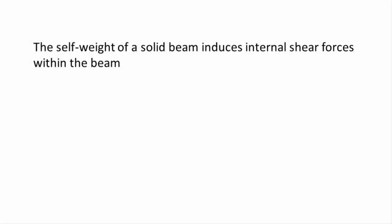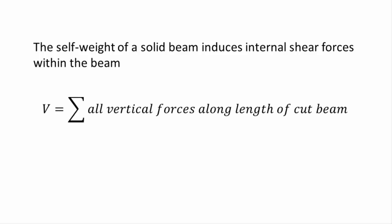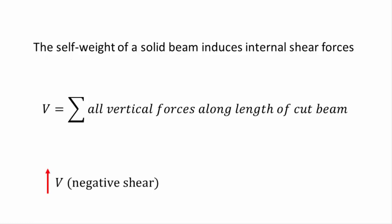In summary, when analysing internal shear forces in solid beams, we need to take into account the physical mass of the beam, which induces an internal shear stress within the beam due to its own self-weight. To calculate the internal shear force at any point along the beam, cut the beam at that point and vectorially add up all of the vertical forces from the start of the beam on the left side all the way to the point of cut. Such forces can include the weight of the cut section, any reactions on that section, and any additional loads on that section. In static equilibrium, the net shear force equals the sum of all those vertical forces. If the resultant shear force points upwards, this is called negative shear; if it points downwards, this is called positive shear.